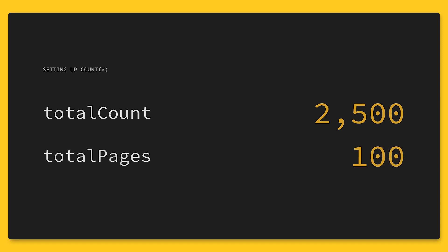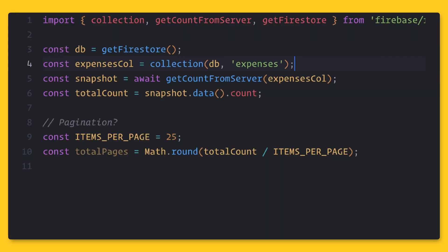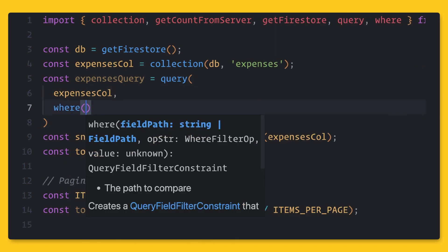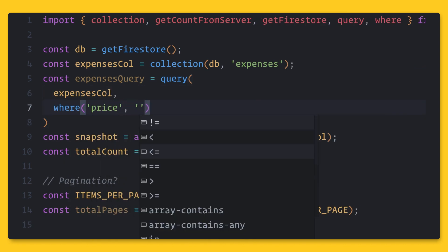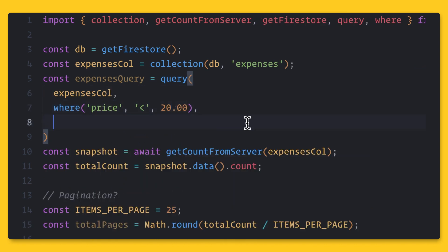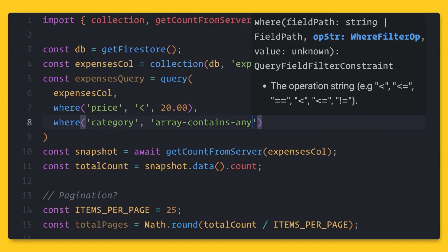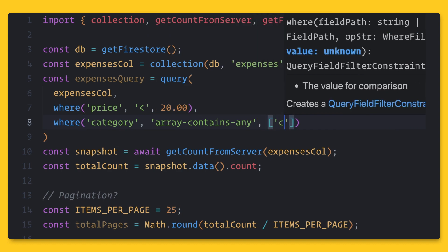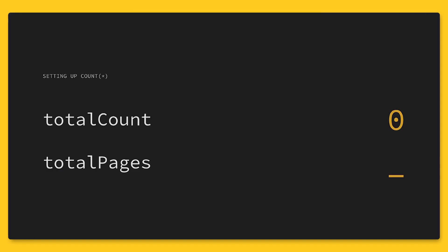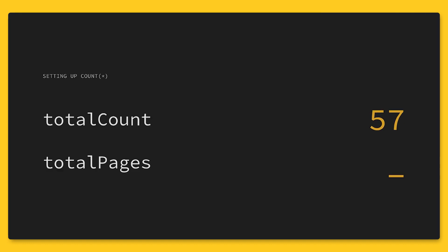Yeah, of course it does. So let's write a query that returns expenses that are less than $20, and that contain the category of either household or clothing. We can see that the cost or the amount is less than before, but it works just the same as the previous example.